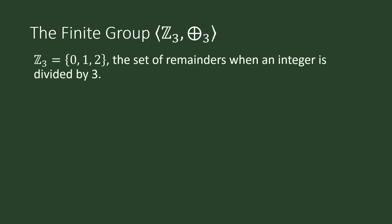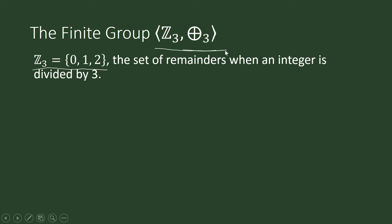The finite group Z_3 with addition modulo 3 is the set that contains the remainders when an integer is divided by 3. With addition modulo 3, we get the remainder when the sum is divided by 3.